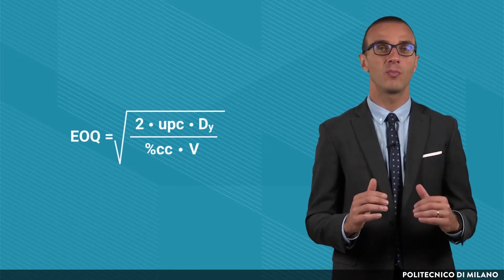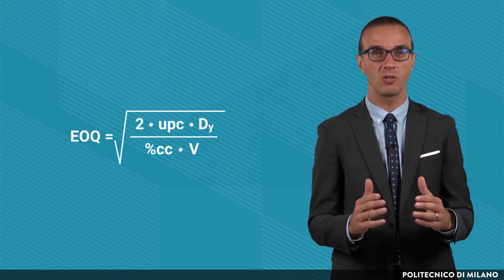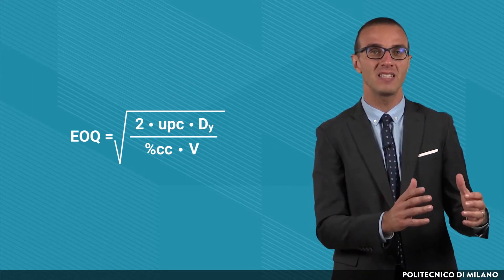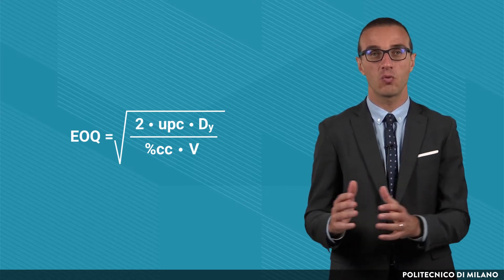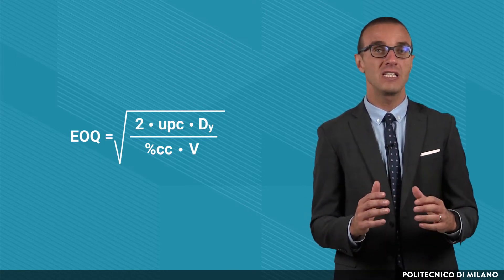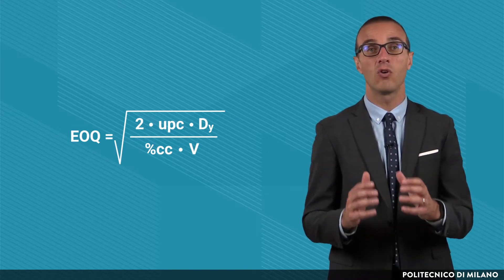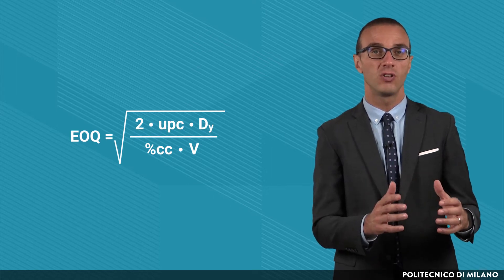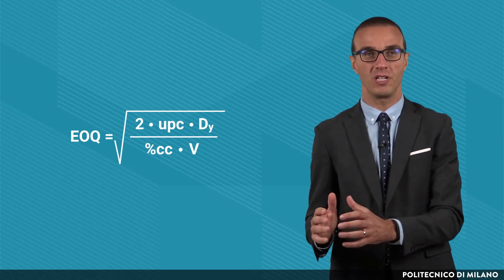Therefore, the higher the procurement cost with respect to the inventory carrying cost, the higher the EOQ. It is cheaper to minimize the number of orders and then to order large quantities. Vice versa, the higher the inventory carrying cost with respect to the procurement cost, the lower the EOQ. It is cheaper to reduce the average inventory and then to order small quantities.